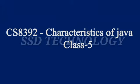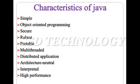Hi friends, today we are going to discuss about characteristics of Java. Characteristics of Java are: simple, object oriented programming, secure, robust, portable, multi-threaded, distributed application, architecture neutral, interpreted, and high performance.